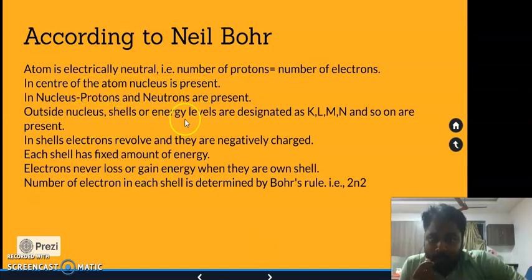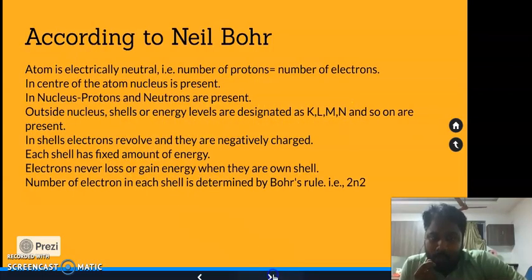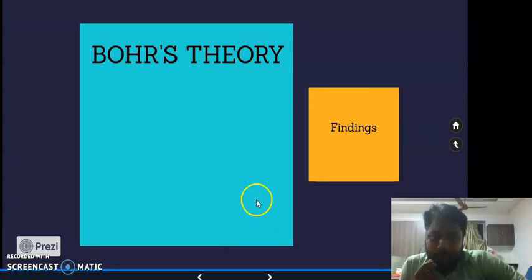The outer shells have K, L, M, and so forth. Bohr's theory has given us the energy levels and their variations. Thank you.